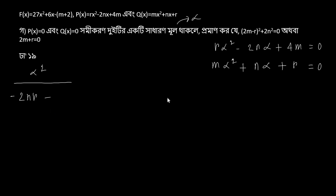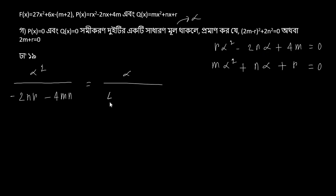From the ratio method, multiplying r minus ... and 4m by n, we get minus 4mn. Applying the cross-multiplication formula: alpha divided by ... equals alpha divided by ...